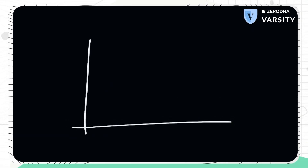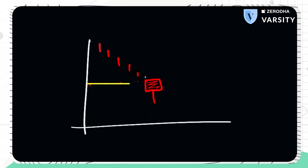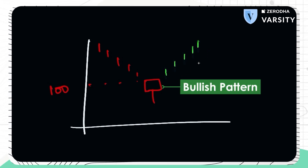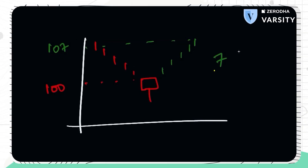Assume that the stock price you are looking at has been declining for a while, and right at the end of the decline, the stock forms a hammer. Let's say the hammer forms at 100. After the decline, you expect the stock price to increase because a hammer is a bullish pattern. Let's assume you expect the stock price to move up to the nearest resistance, which is at 107. This translates to a 7% up move.